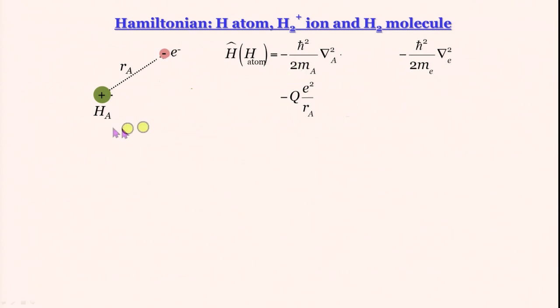That is why we will write things like Ma and Me without losing too much of generality. So here since we are going to bring in another nucleus anyway, we start with this notation HA. HA means hydrogen atom A.